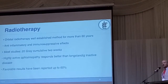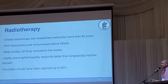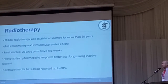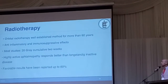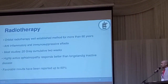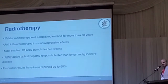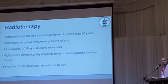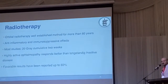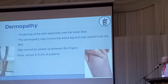Radiotherapy is actually a therapy that's been established for more than 60 years. It's rarely used, but in the patient I was just talking about it was used. It has an anti-inflammatory and immunosuppressive effect. In most studies, they use 20 gray cumulatively over two weeks. It works best when the disease is very active, because when you have chronic disease, the muscle has fibrosis — and radiating fibrosis doesn't help. Favorable results have been reported in up to 60% of a well-selected population.